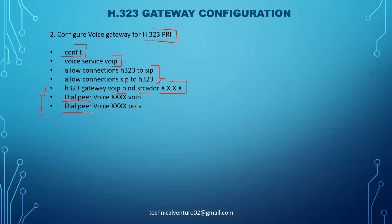The next part is dial peers - you need to create dial peers on your gateway as well. H323 is a peer-to-peer protocol, so if you lose the connection on CUCM or your CUCM is down, everything should be configured on the gateway too. If someone loses connection on CUCM, the gateway will handle the call using its own dial peer configuration.